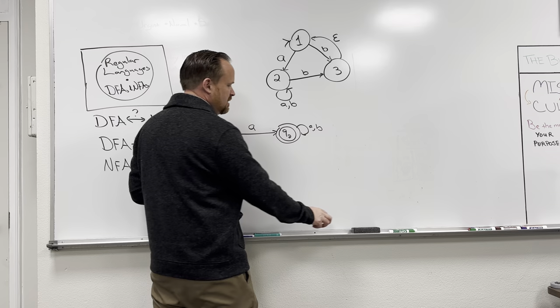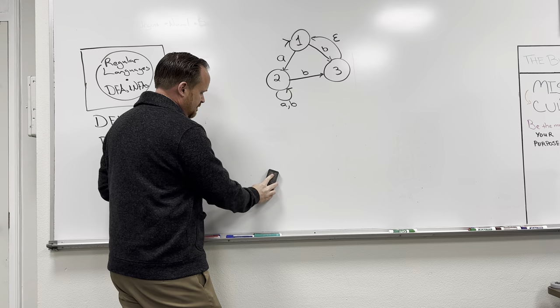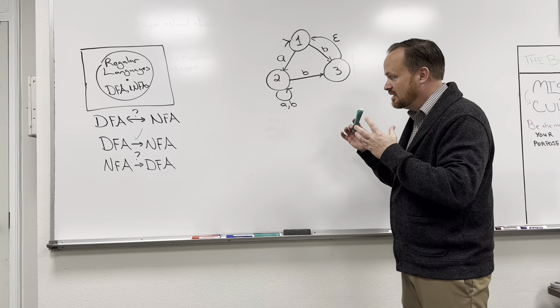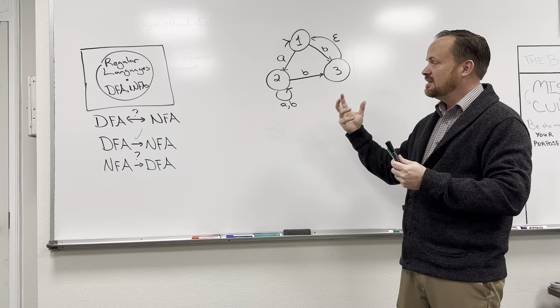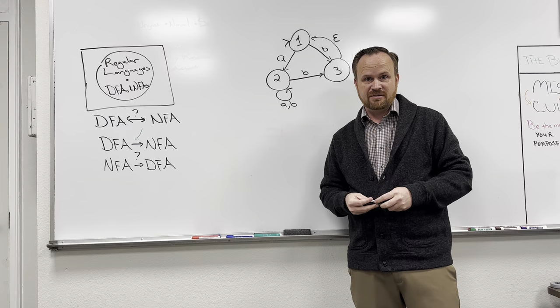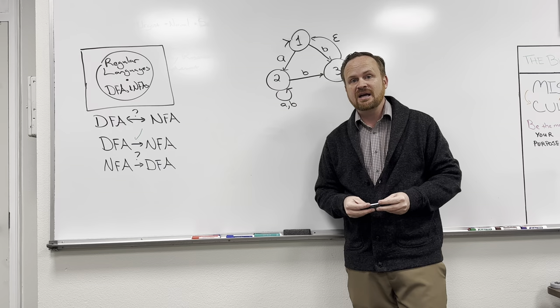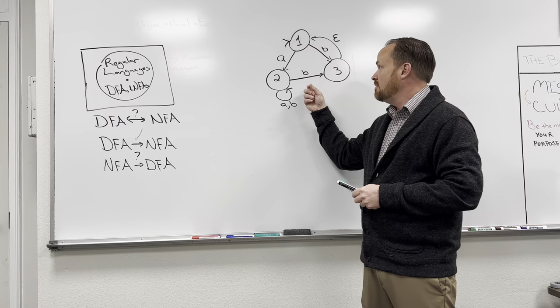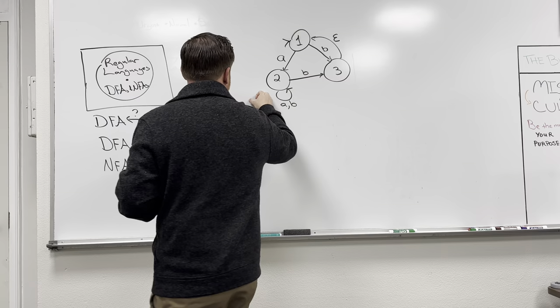Step one is done. Step two is significantly harder: for every NFA there is an equivalent DFA. This is asking whether we can build the more restrictive form from the less restrictive one. This is incredibly different. One of my favorite test questions is: what can NFAs do that DFAs can't? The answer is absolutely nothing — however, NFAs can be more expressive and easier to write.